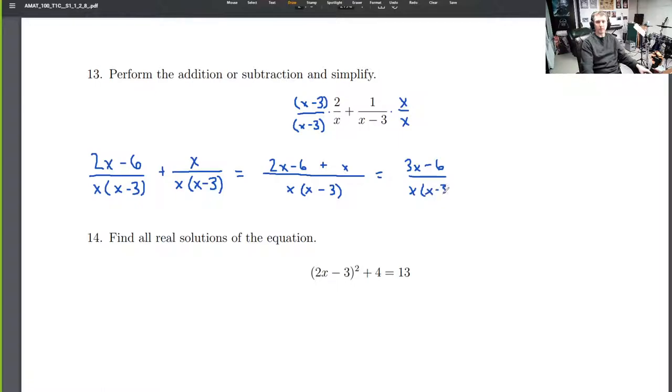And that gives us 3x minus 6 over x times x minus 3. And this is pretty close. If you wrote this as your final solution, that's pretty darn close. But that's not quite it, because the instructions say to simplify. So what can we simplify here? We can pull out a factor up top of 3, which gives us 3 times (x minus 2) divided by x times (x minus 3).